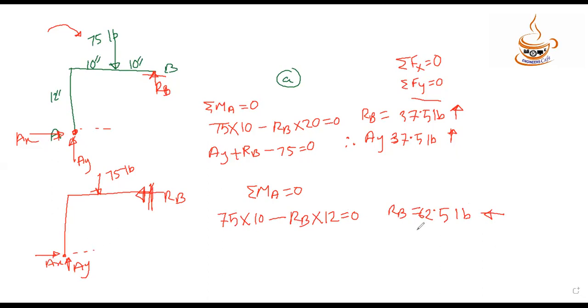For horizontal forces, summation of Fx gives us Ax equals 62.5 pounds. For vertical forces, we have 75 pounds downward, so Ay resists with 75 pounds upward. The resultant force at A can be found using these components.